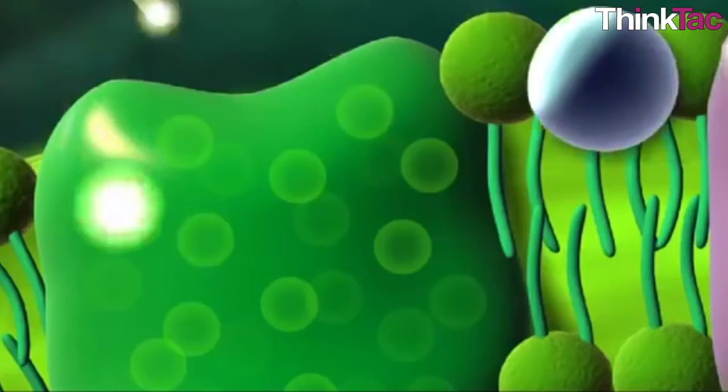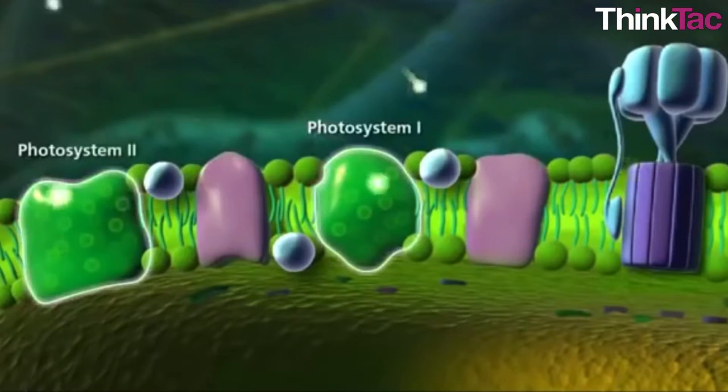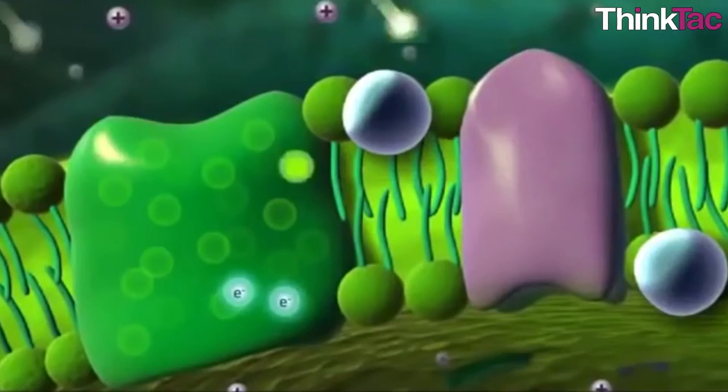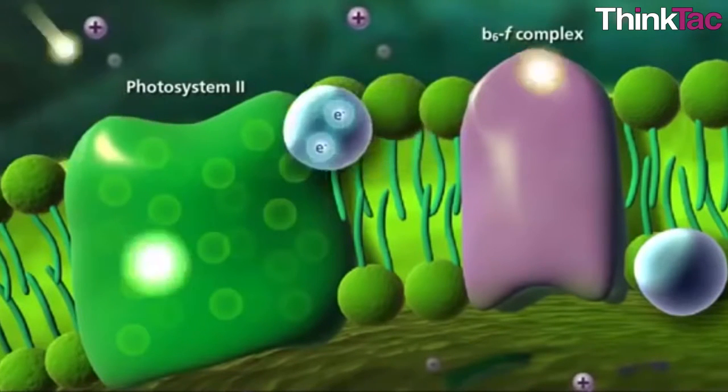Now, because the chlorophyll molecules are in a group, when one molecule releases energy on getting excited, it excites another adjacent molecule. In this way, energy passes back and forth till the time the energy reaches the reaction center.